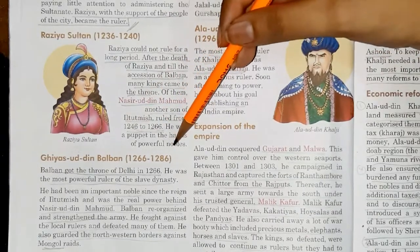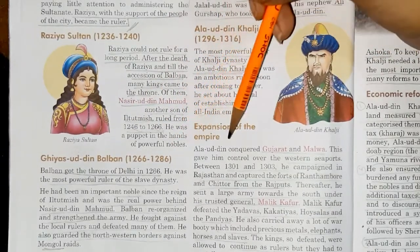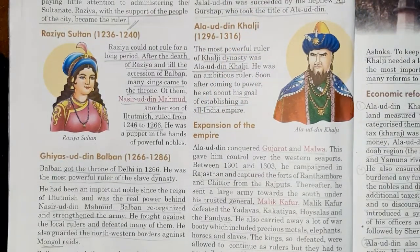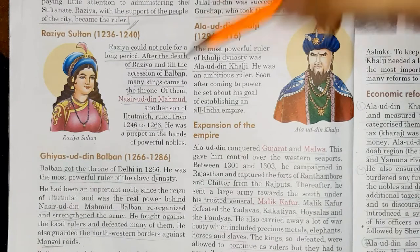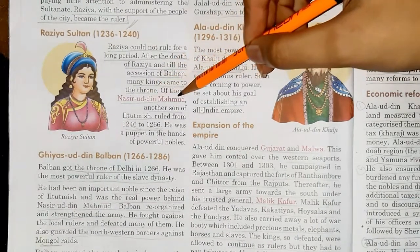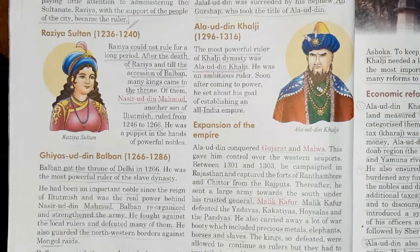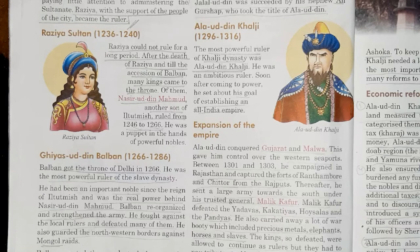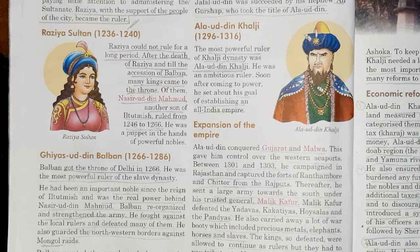Naziruddin Muhammad was a puppet in the hands of powerful nobles in his kingdom. To recap the sequence: we had Qutubuddin Aibak, then Iltutmish, then Rukhnuddin Feroz Shah, then Razia Sultan, then Naziruddin Mahmood — who had the longest period among these intermediate rulers. There were also some others, but Naziruddin had a comparatively long period of rule.